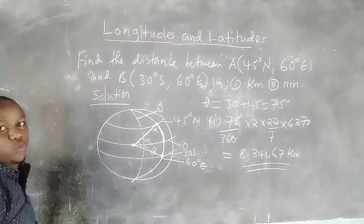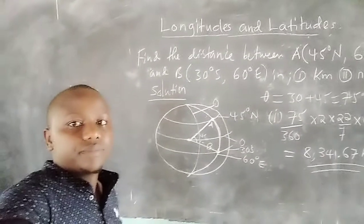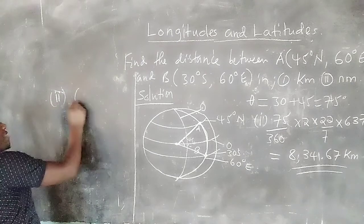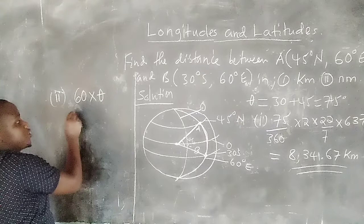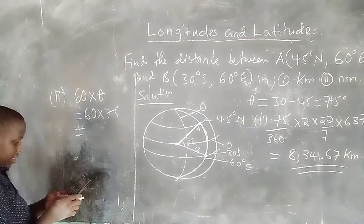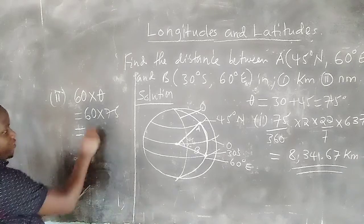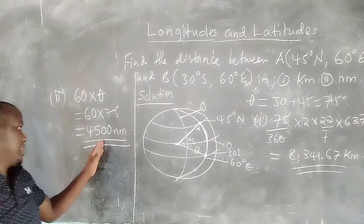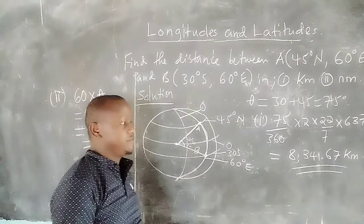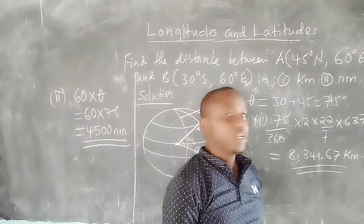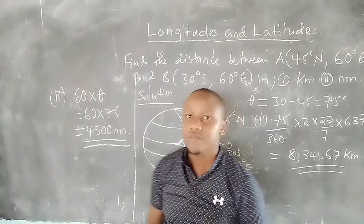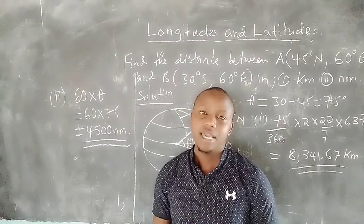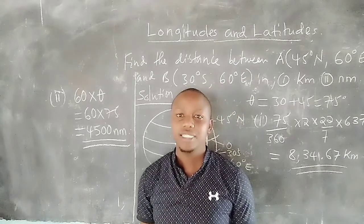For Roman II, the distance in nautical miles: 60 × 75 = 4500 nautical miles. So the answers are 8341.67 kilometers and 4500 nautical miles. That is how we calculate the distance between two places on the same longitude. Thank you for following — subscribe to Shifting Grades and share the link.